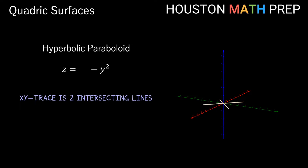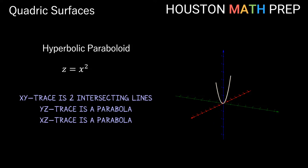The yz trace is found by setting x = 0. Since the y² term is negative, we get a parabola in the yz plane that opens downward from the origin. For the xz trace, setting y = 0 gives another parabola equation — this time opening in the positive direction. Looking at all traces together, the lines suggest flatness in diagonal directions while the surface opens up in some directions and down in others.